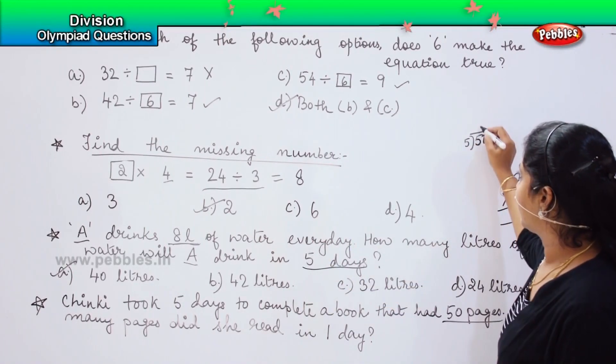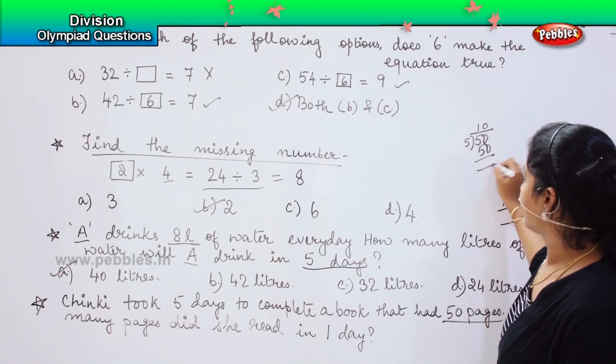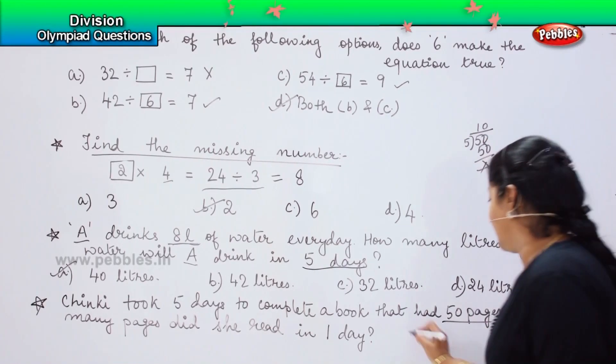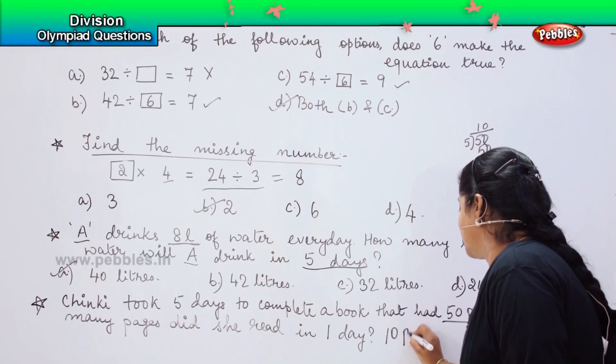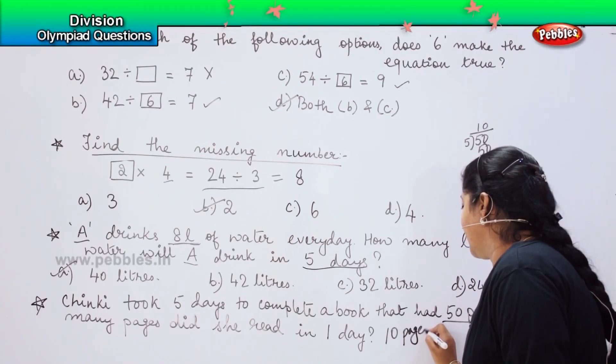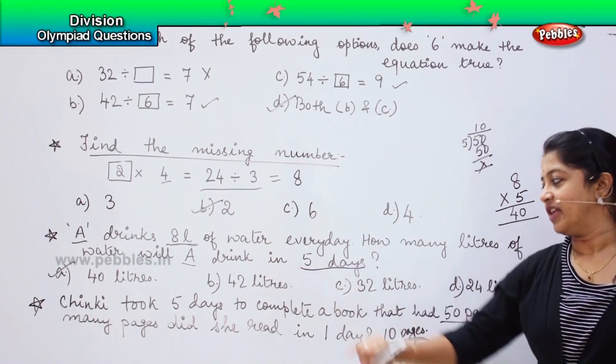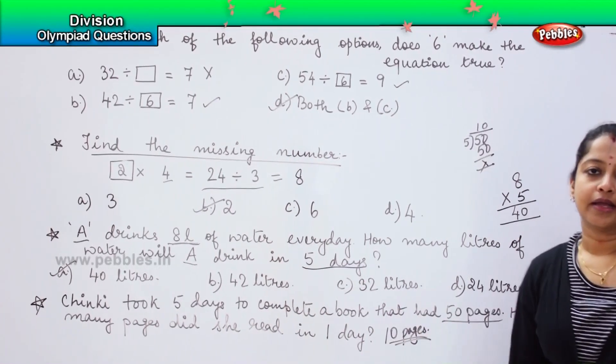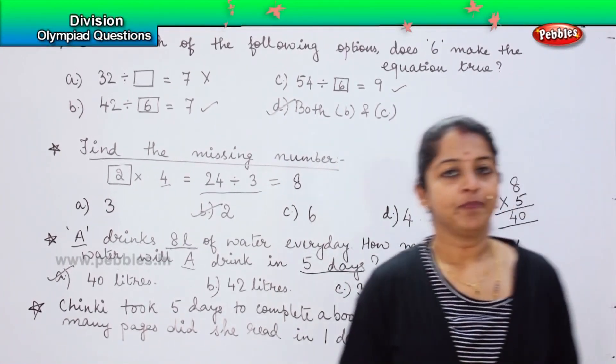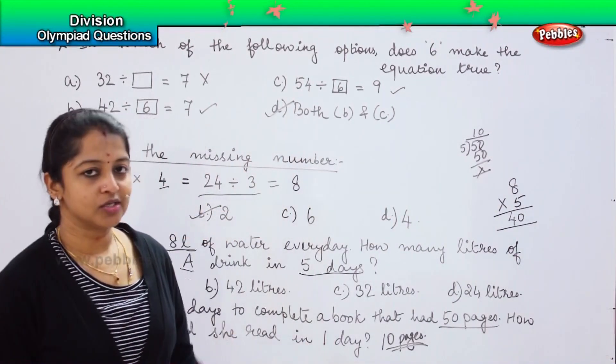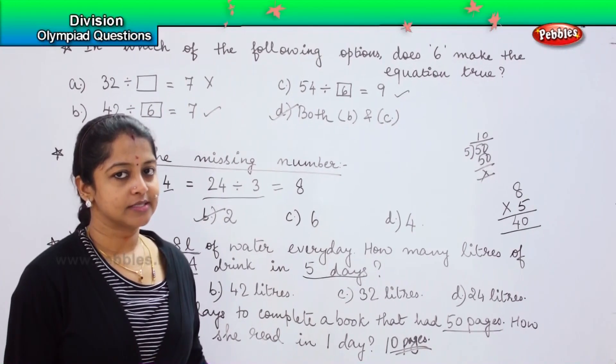What we will do is 50 divided by and what is the number of days? 5. 5 into 10 is 50. My answer will be 10 pages. Chinky will be reading 10 pages in one day and she will take 5 days to complete the entire book which had 50 pages. Is it clear, children? Did you understand the question?